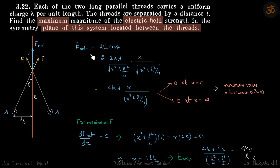That should be E_net. E_net is equal to 2E cos theta. Cos theta is x over root of x squared plus l squared by 4.